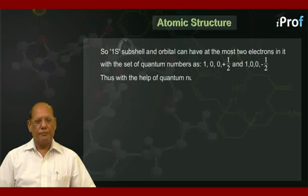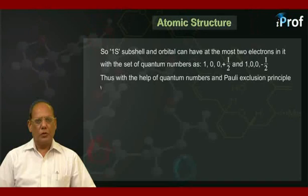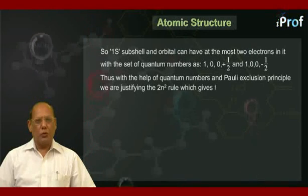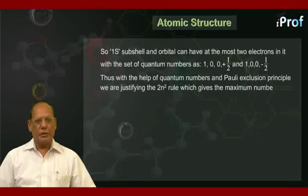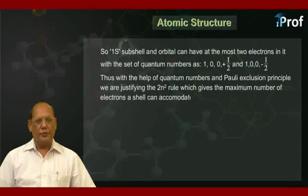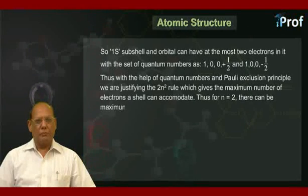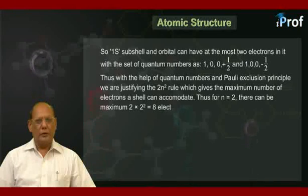With the help of quantum numbers and Pauli exclusion principle, we are justifying the 2n² rule, which gives the maximum number of electrons a shell can accommodate. Thus for n equal to 2, there can be maximum 2 × 2², that is equal to 8 electrons in it.